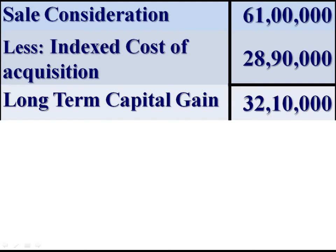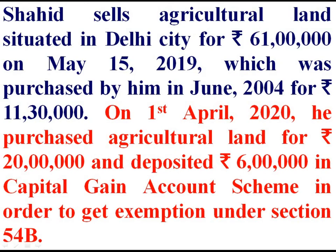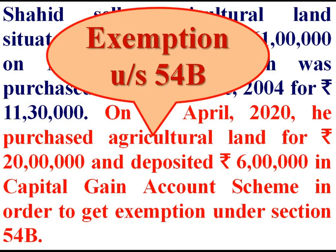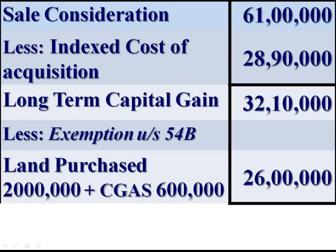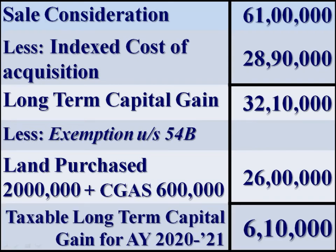Deducting it, we get Rs 32,10,000 as long-term capital gain. The assessee purchases another agriculture land for Rs 20 lakh and deposited Rs 6 lakh in capital gain account scheme. The aggregate of these two amounts is allowed as exemption under Section 54B. That is, the exemption under Section 54B is the aggregate of the amount of capital gain utilised for the purchase of agricultural land, Rs 20 lakh, plus deposited in Capital Gain Account Scheme, Rs 6 lakh — total Rs 26 lakh. We get Rs 6,10,000 as the taxable long-term capital gain for the assessment year 2020-21.